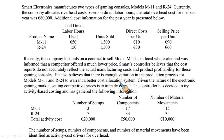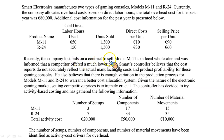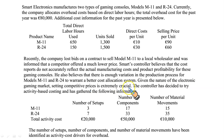Either it will be departmental rates or activity-based costing. Given the nature of the electronics gaming markets, setting competitive prices is extremely crucial. Your bids were rejected because you quoted a higher price. In order to remain competitive, you need a better costing system. You need to quote competitive pricing, and that is only possible when you have good, accurate costing information.